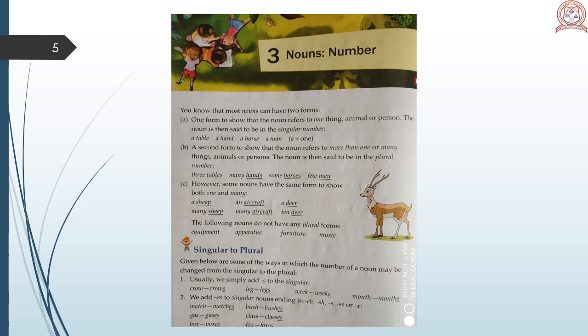Lesson 3. Nouns, number. One form to show that the noun refers to one thing, animal or person. The noun is then said to be in the singular number. Singular means one. A second form to show that the noun refers to more than one or many things, animal or person. The noun is then said to be in the plural number. Some nouns have the same form to show both one and many. A sheep, an aircraft, a deer, many ships, many aircrafts, ten deers.